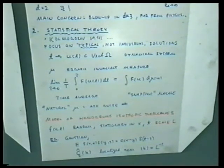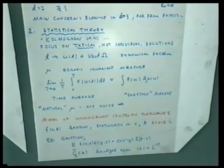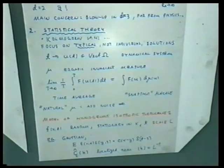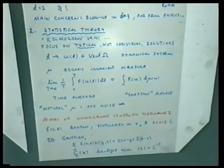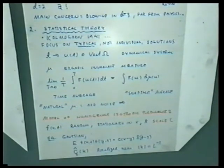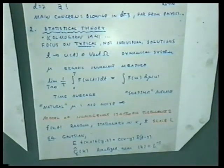You take the force to be random, stationary in x and t — translation invariant in space and time — and you put it at scale L. So you think of your spoon mixing coffee of size L, but otherwise doing it randomly with no spatial preference. For instance, you could take a Gaussian noise with certain covariance, which is mostly what has been studied in the mathematical literature. You want the noise to be concentrated on scale L, so its Fourier transform should be localized near L^{-1}.